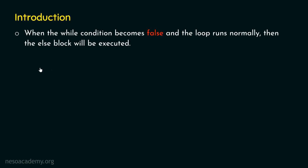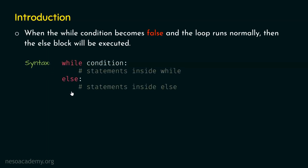Let's see the syntax of while-else. First we have the while statement: while condition. If this condition is satisfied, the statements inside the while loop will be executed. If the condition becomes false, the else block will be executed. But if there is a break keyword among the statements and we encounter it, the loop will terminate but the else block will never be executed. The statements inside else will only be executed when the condition becomes false.